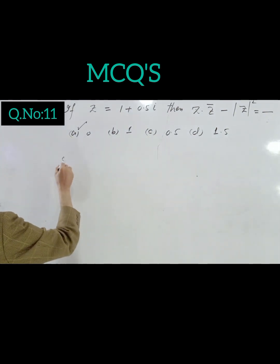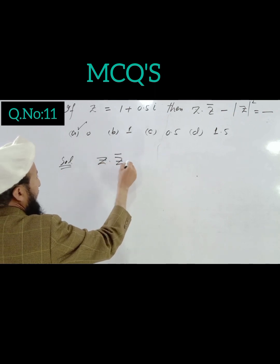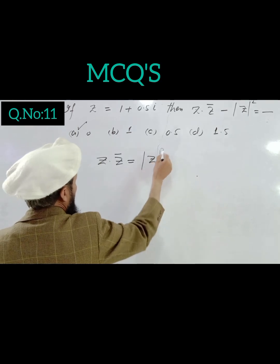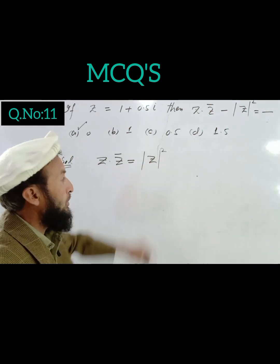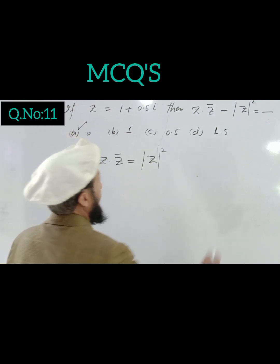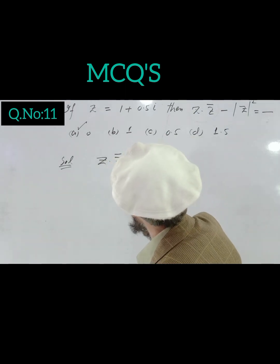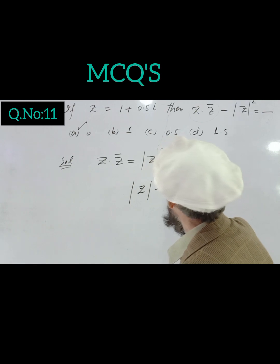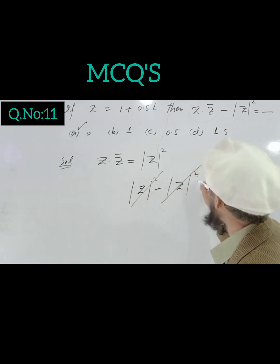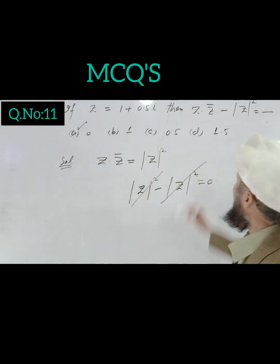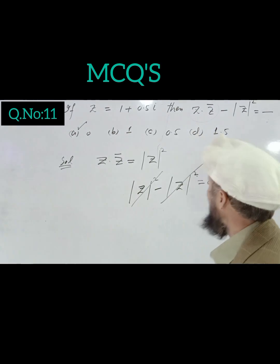Using the property: z times z-conjugate equals |z| squared. Replacing in the given expression: |z| squared minus z times |z| squared equals |z| squared minus |z| squared, which equals 0.